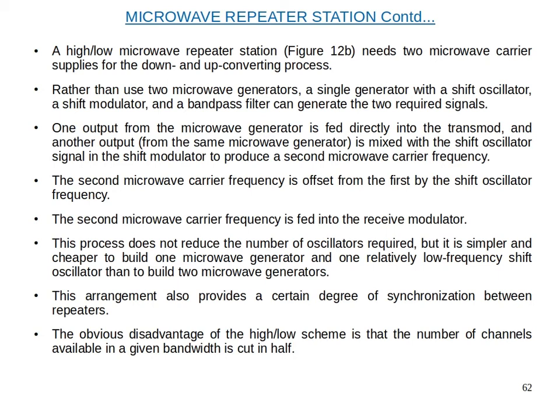This process does not reduce the number of oscillators required, but it is simpler and cheaper to build one microwave generator and one relatively low-frequency shift oscillator than to build two microwave generators. This arrangement also provides a certain degree of synchronization between repeaters. The obvious disadvantage of the high-low scheme is that the number of channels available in a given bandwidth is cut in half.